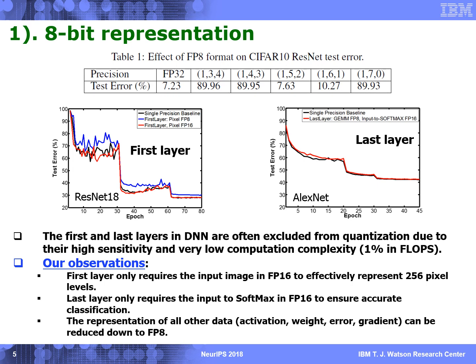But there are some exceptions on the first and last layers for larger networks. Specifically, we found that only the input image on the first layer and the input to softmax on the last layer need to be kept in 16-bit. All other data can be safely reduced down to FP8.